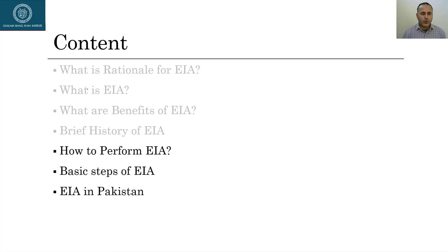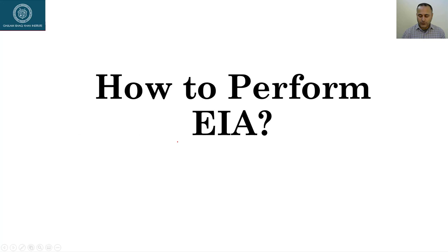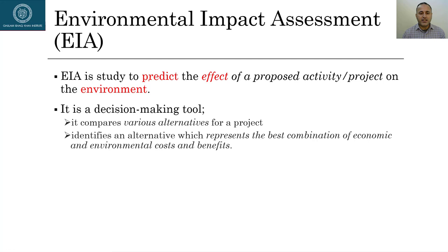Today we will mostly talk about how we perform the environmental impact assessment. Environmental impact assessment is a study to predict the effect of a proposed activity or project on the environment. We use the word 'predict' because we are doing EIA studies for proposed projects — projects which will happen in the future. It is also a decision-making tool because it compares various alternatives for the project.